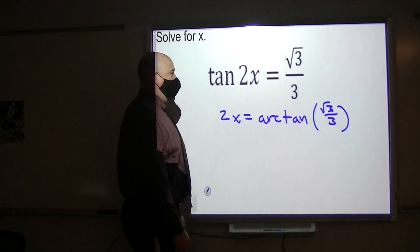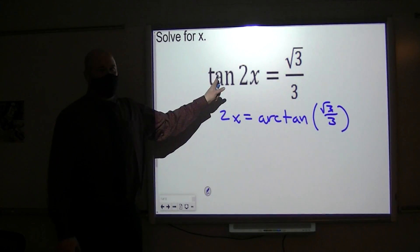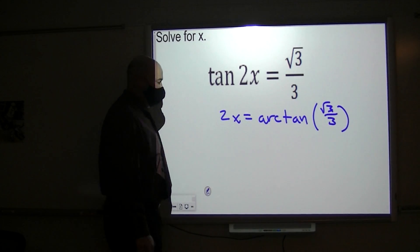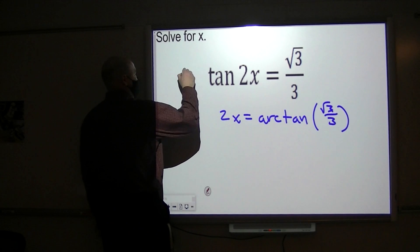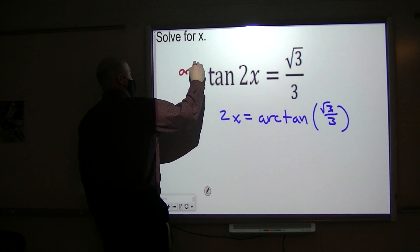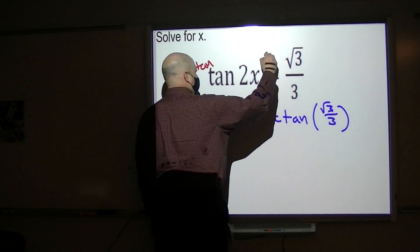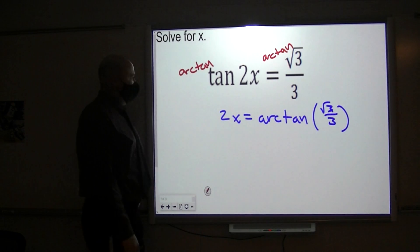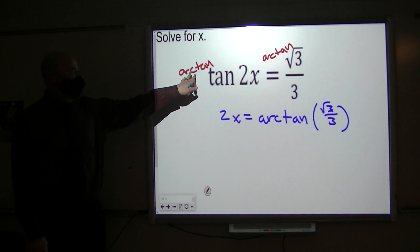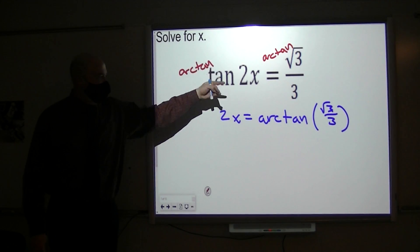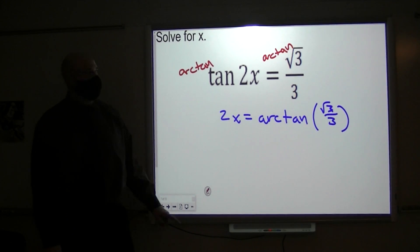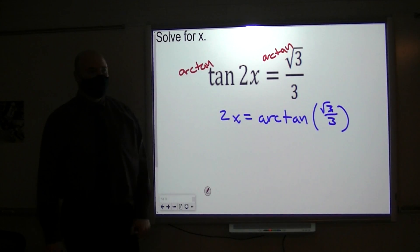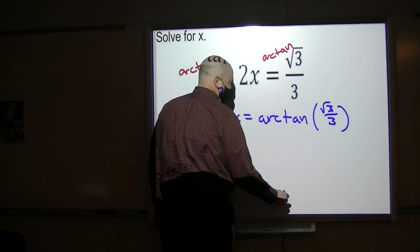So we're taking the arc tangent of both sides. The tangent that was over here is gone, and now I have an arc tangent with that side. We're taking the arc tangent here and taking the arc tangent here. That is the inverse operation, so they cancel, and I'm left with 2x. I'm taking the arc tangent of this and writing it like so, and then evaluating.